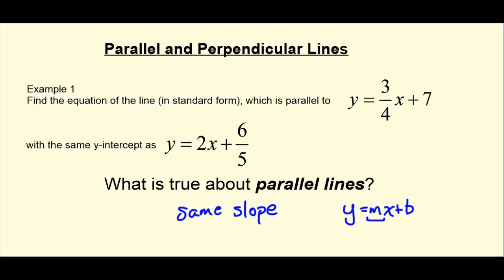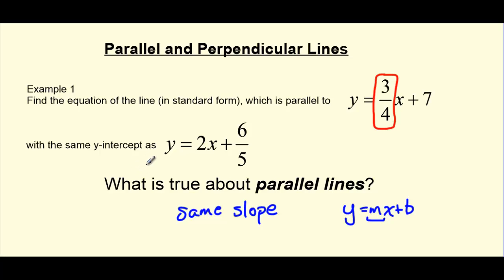So if we look at our line y equals 3 fourths x plus 7, we can see that the m value is 3 fourths. So our line will have the same slope, 3 fourths.